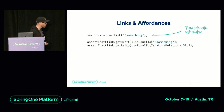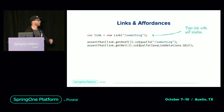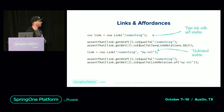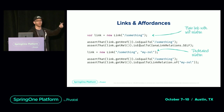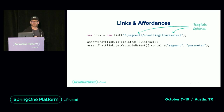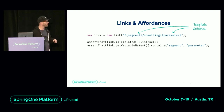Moving on to links. There is a simple and fundamental API to actually create links. If you want to go ahead in your controller and say new link, here's my target, here's my link relation — if you omit the link relation you get a self-relation. However, if you're working with Spring MVC controllers you don't want to keep track of host names or mappings. You'd rather point to controller methods, which I'll talk about in a bit.